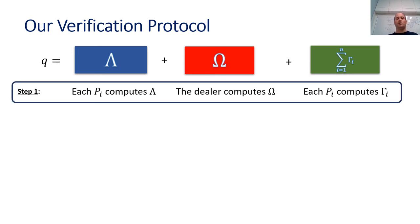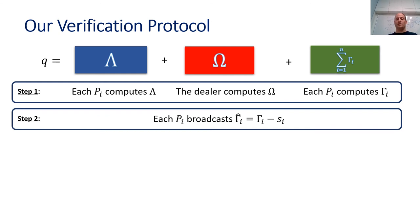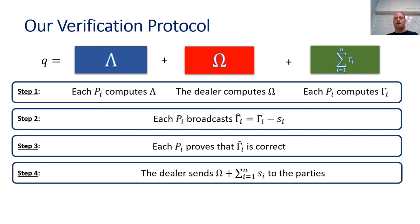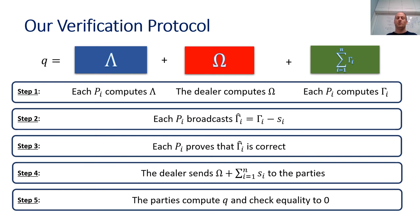In the first step of our verification protocol, each party computes lambda and his share of gamma (denoted gamma_i), and the dealer computes omega. In the second step, we ask each party to secret share gamma_i using our star secret sharing scheme, meaning each party will broadcast the masked gamma_i where the dealer knows the mask. Of course, a malicious party may cheat and secret share an incorrect value. So in the third step, we ask each party to prove that it shared the correct gamma_i. If this step passes successfully and all the proofs are accepted, the parties proceed to the next step where the dealer sends the sum of all the masks that were used. Then the parties in the last step check equality to zero of the final value. If the equality holds, they know with high probability that all multiplication gates were computed correctly; otherwise, they know cheating took place and abort the protocol.